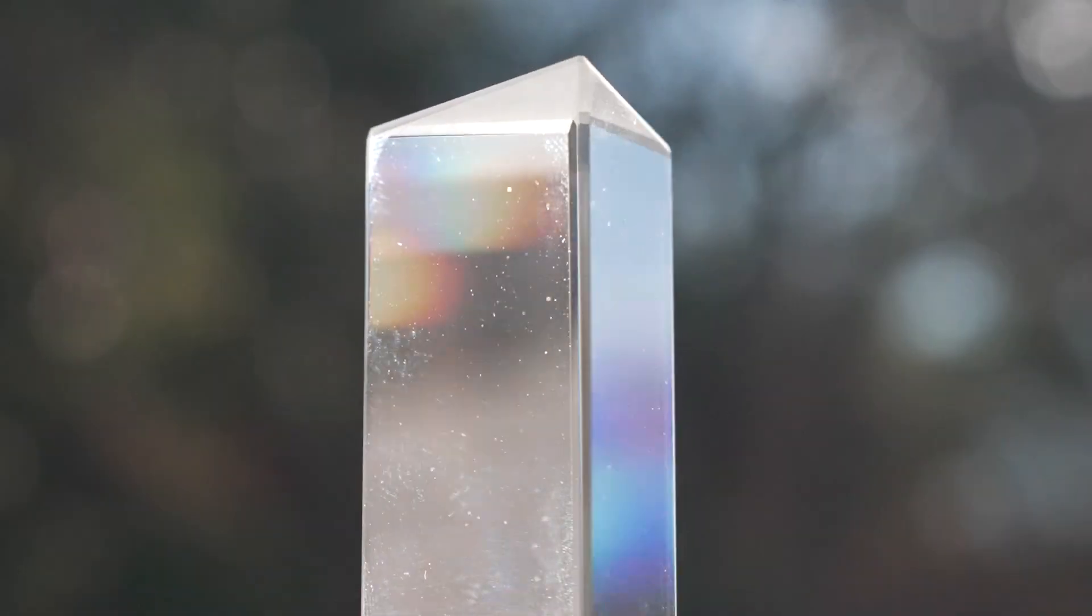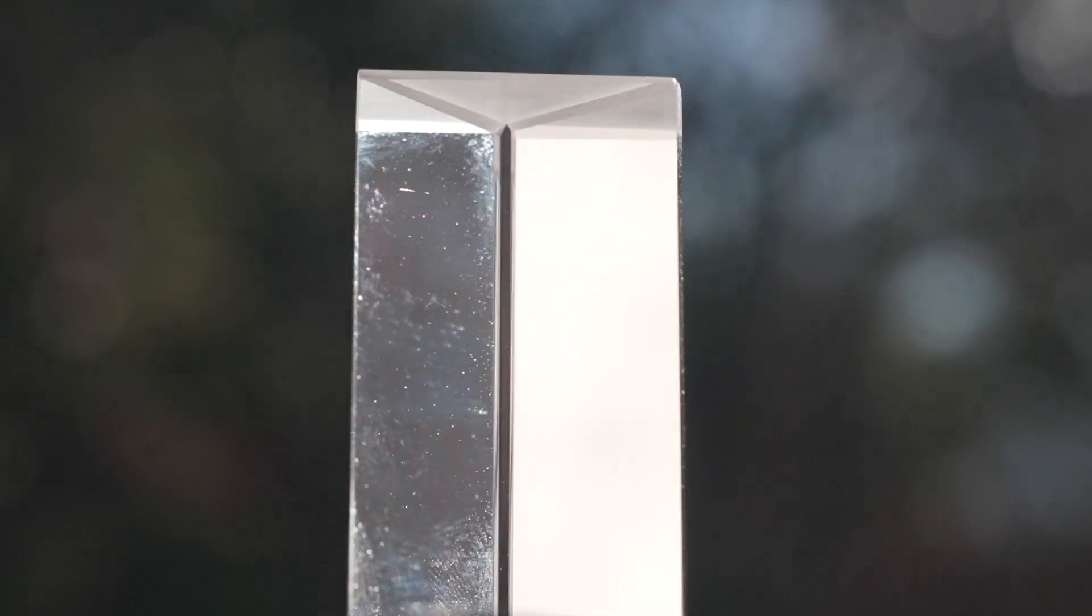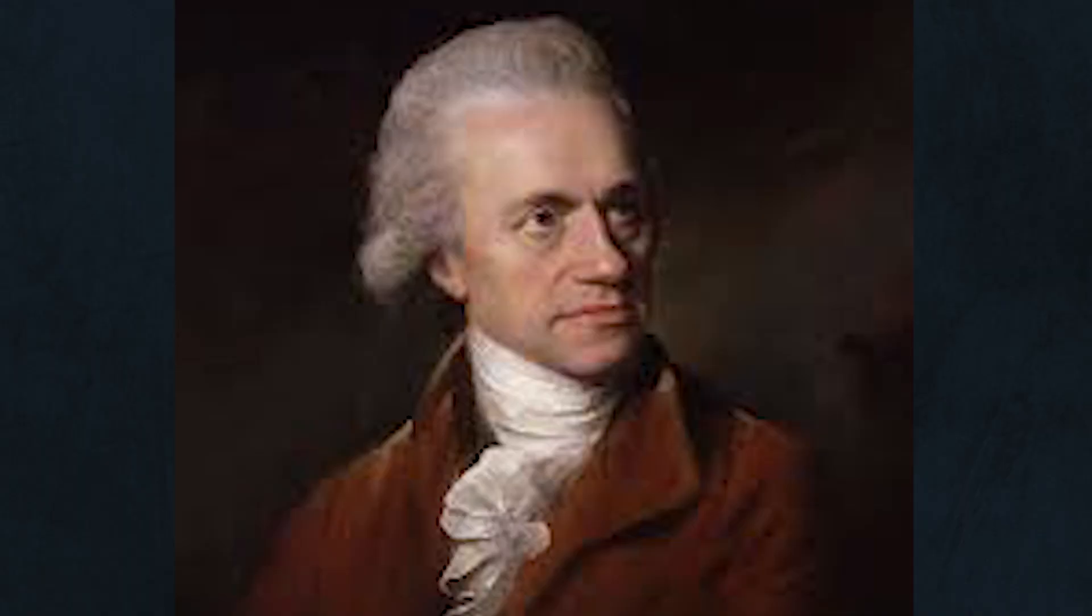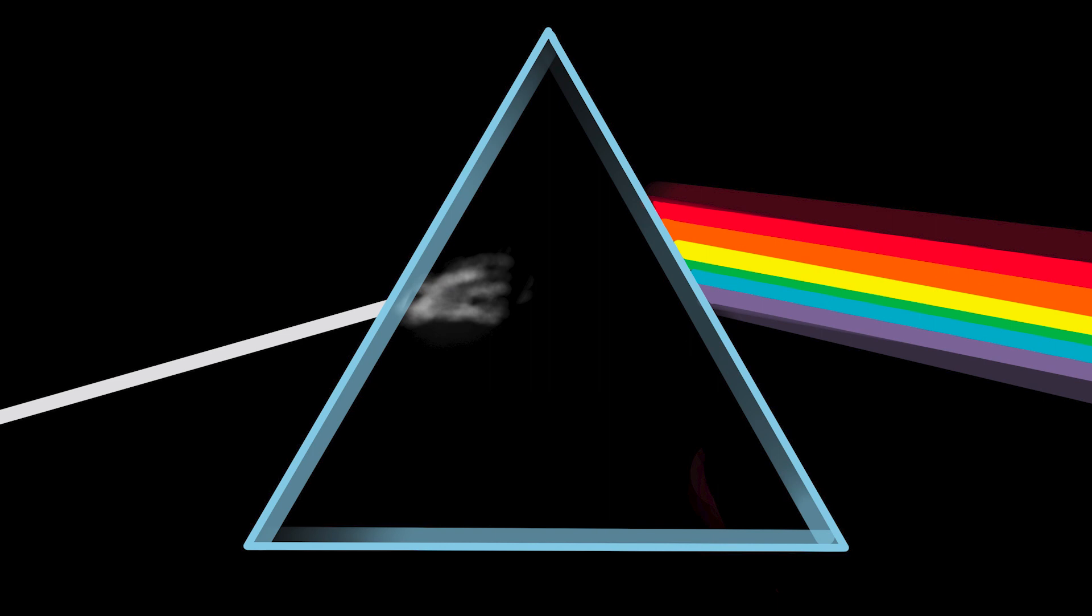Now for a long time it's been known that if we take a prism and expose it to sunlight we can separate the sunlight into the different colours that make up the visible light spectrum. But back in the 1800s a scientist by the name of William Herschel wanted to know if the different colours of light contained different amounts of energy.